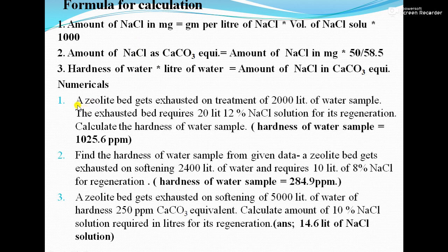Numerical 1: A zeolite bed gets exhausted on treatment of 2000 liters of water. The exhausted bed requires 20 liters of 12% NaCl solution for its regeneration. Calculate the hardness of the water sample. Given: liters of water = 2000, volume of NaCl = 20 L, 12% NaCl means 120 g per 1000 mL, so gram per liter of NaCl = 120 g/L.